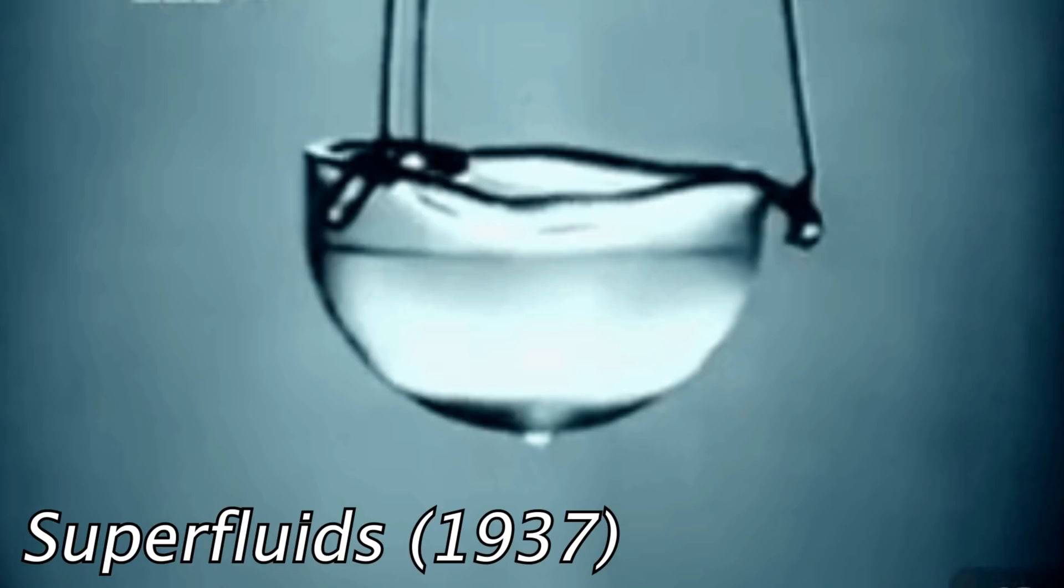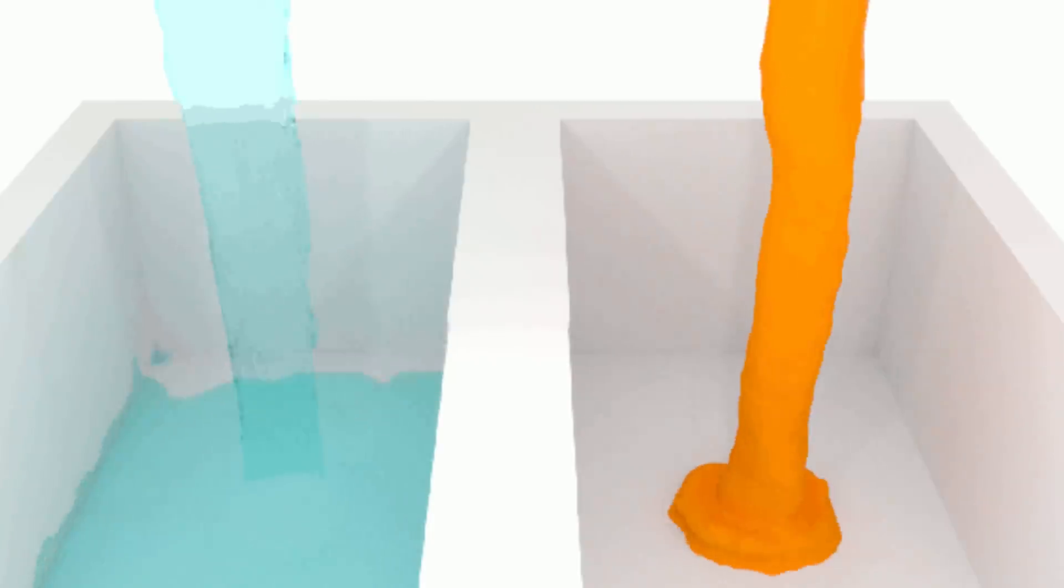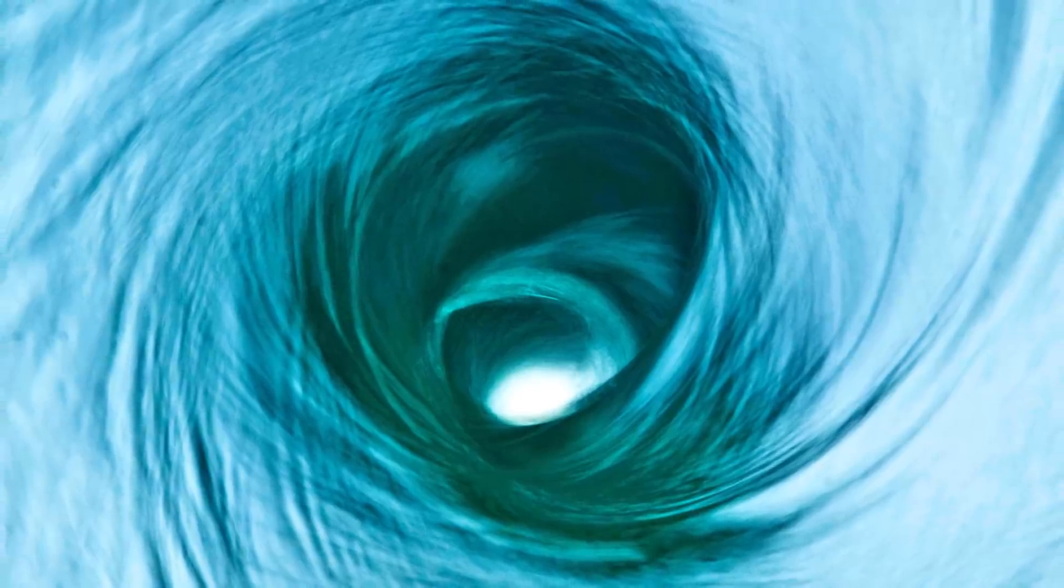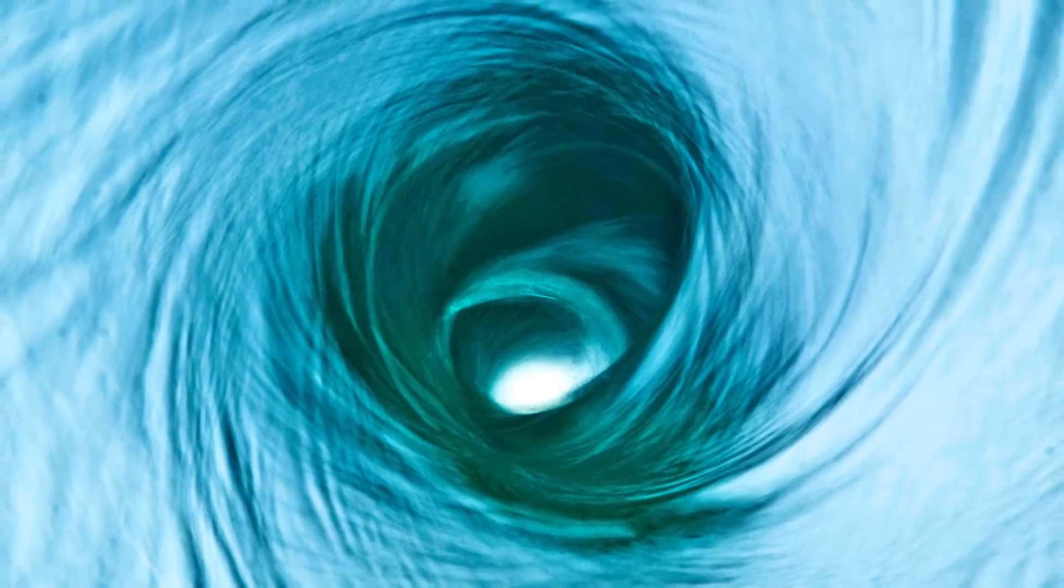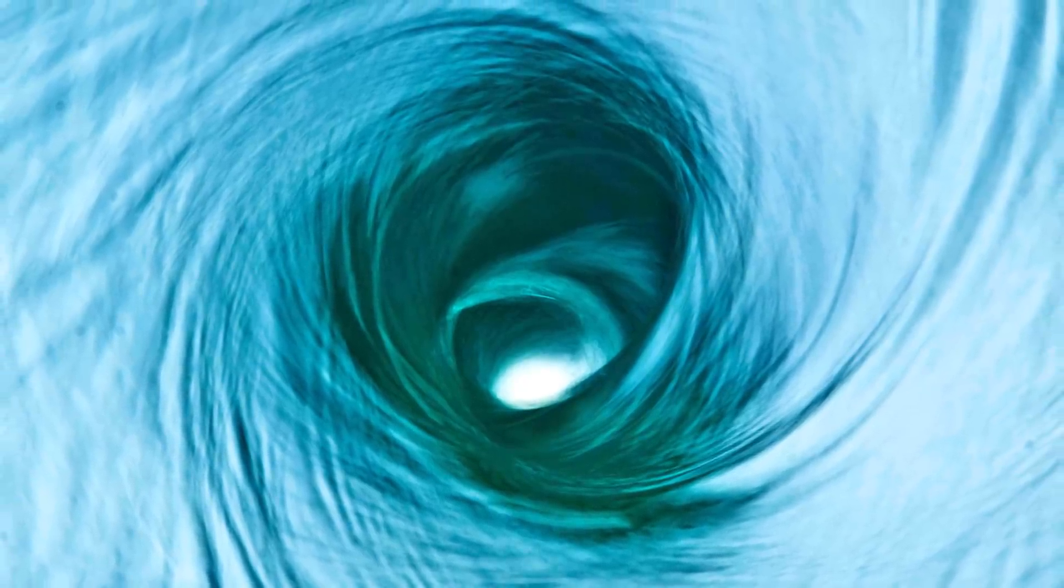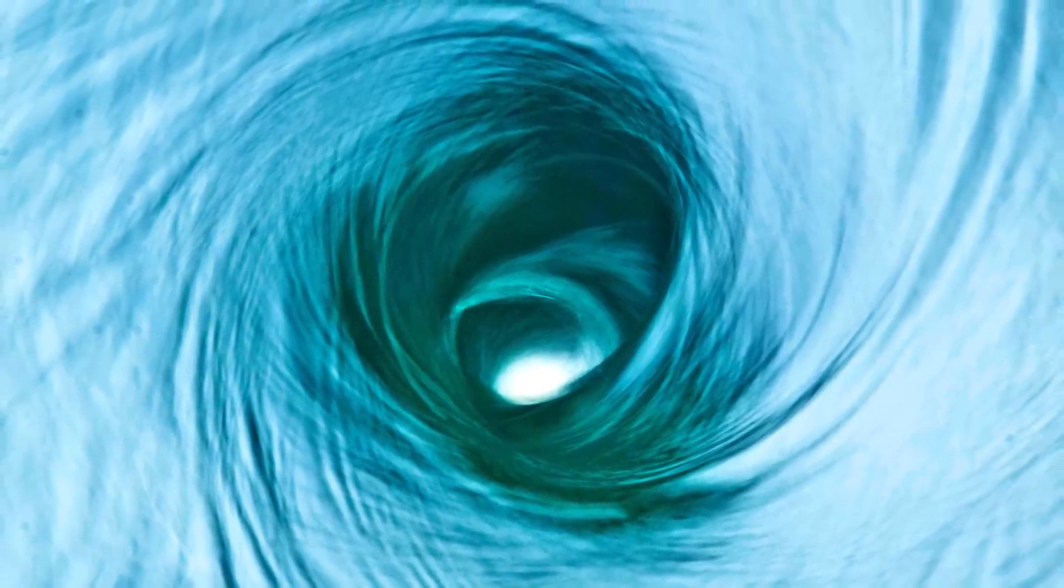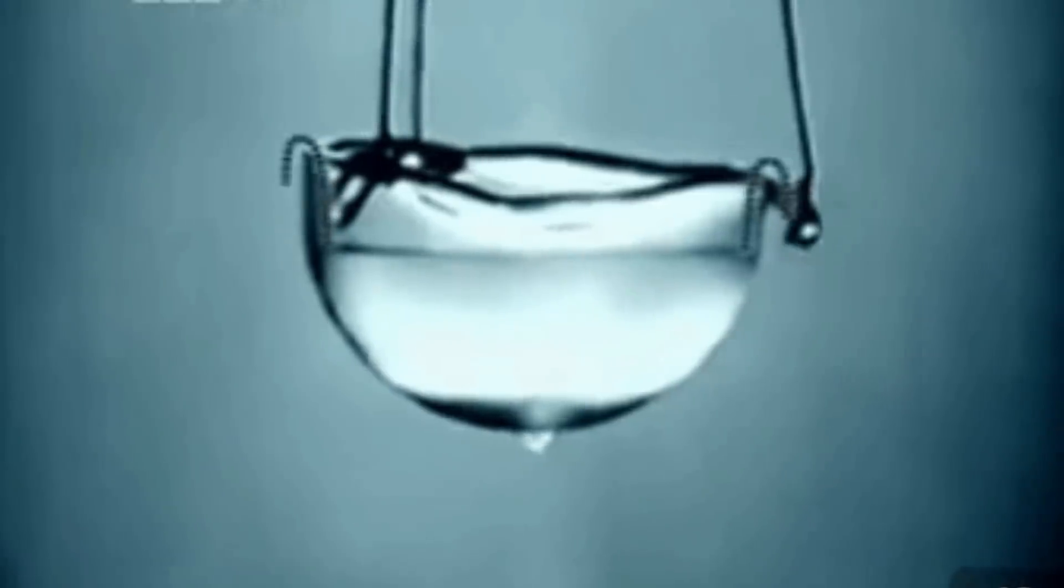Superfluids happen when liquids get very cold, and these also exhibit strange properties. For one, superfluids have no viscosity. And this is basically a measure of a liquid's resistance to deformation, which you can kind of think of as the thickness of the liquid. Since superfluids have none, when stirred, it will form a vortex that would constantly rotate. Imagine stirring your drink and seeing the liquid never stop turning once you stopped. Also, when put in a container, it will creep up the sides and along the outside, forming a droplet at the bottom.